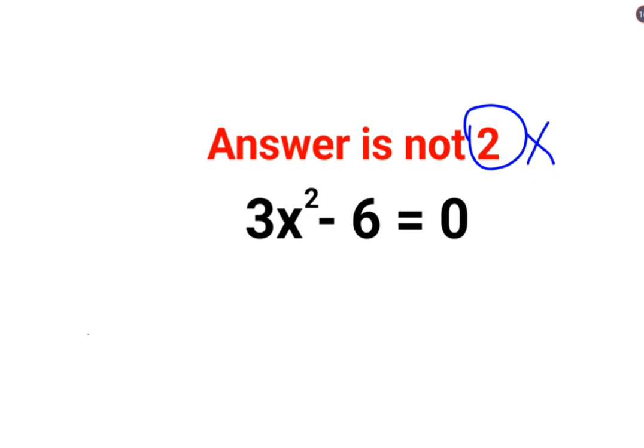See, whenever you have something like this, we will try to shift the number on the other side of the equal to and we will try to keep the variable only on this side of the equal to.